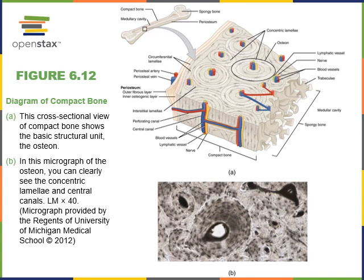Compact bone is a superficial layer in our bone organs. Compact bone is a tissue that has a dense, smooth, solid appearance. But under the microscope, compact bone has a repeating structural and functional unit called an osteon. An osteon consists of a central canal surrounded by plates of bone that form concentric circular plates called concentric lamellae.